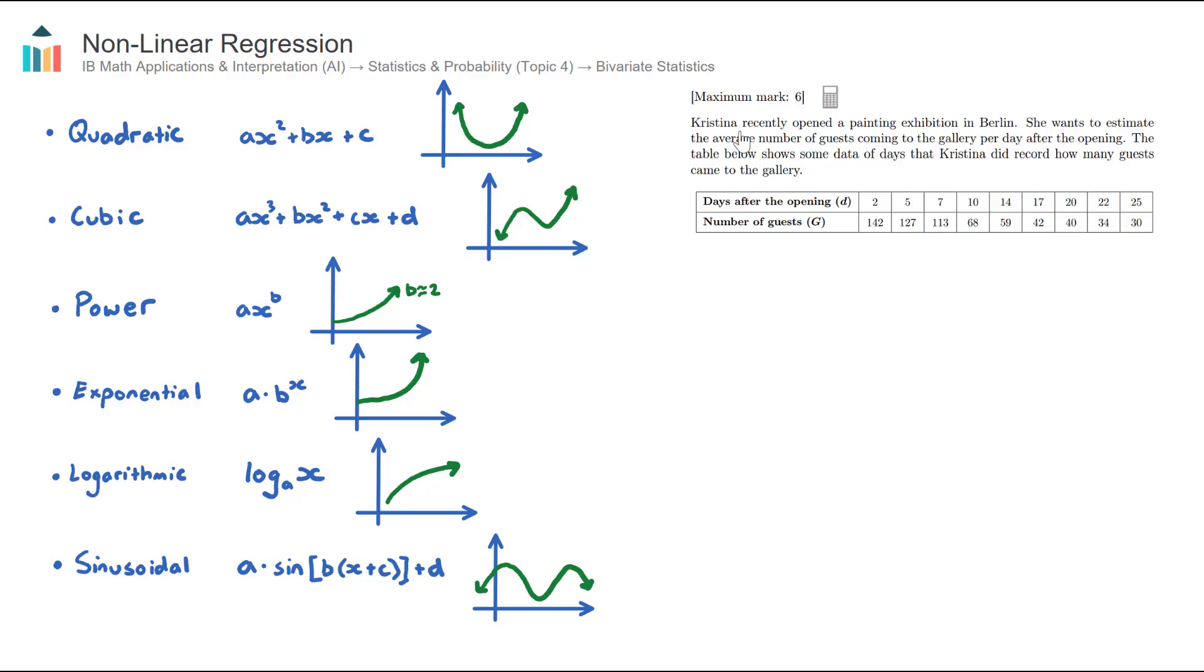It's about Christina opening a painting exhibition in Berlin. And we have the independent variable, which is the days after opening. So for example, this first data point here is the second day after opening. And the dependent variable is the associated number of guests that day. And we can see here that unfortunately, it decreases over time. So clearly, there would have been some exuberance at the start and the novelty factor and people would have come in to see this new gallery. And then unfortunately, it decreased. But then it looks to be plateauing here.